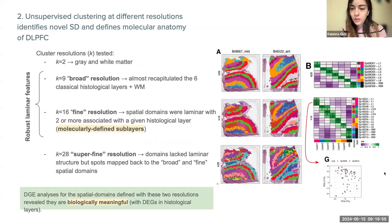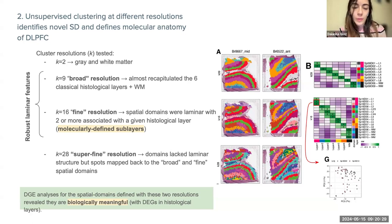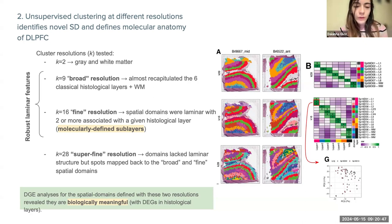Once spatial registration was established and single-nucleus RNA-seq and spatial transcriptomics experiments were performed, the next step was to assess the effect of increasing cluster resolution — the K parameter in unsupervised clustering — on spatial registration results and identification of novel domains and sub-layers. With K equal to 7, they correctly predicted gray and white matter spots, confirming basic structure. With K equal to 9, the broad resolution, they almost recapitulated the six classical histological layers from one to six plus the white matter.